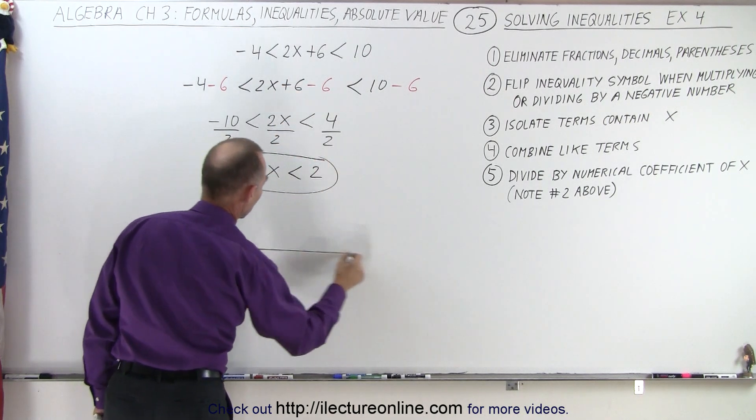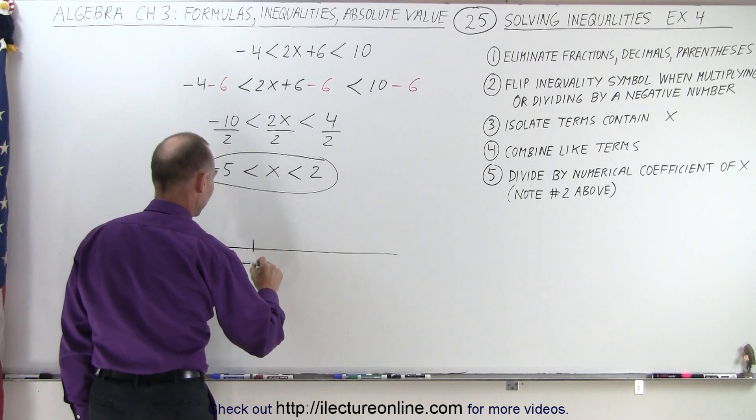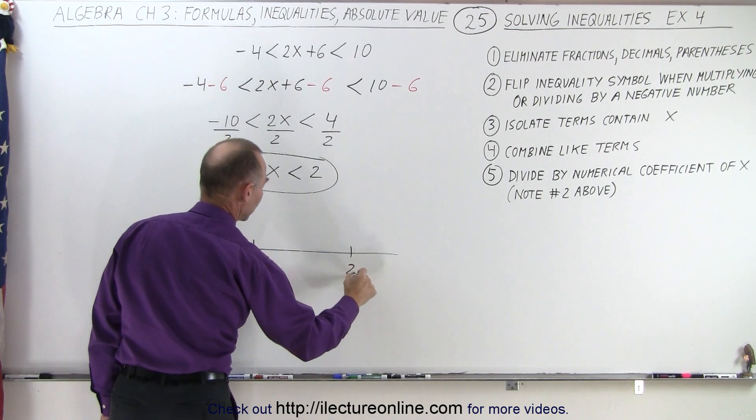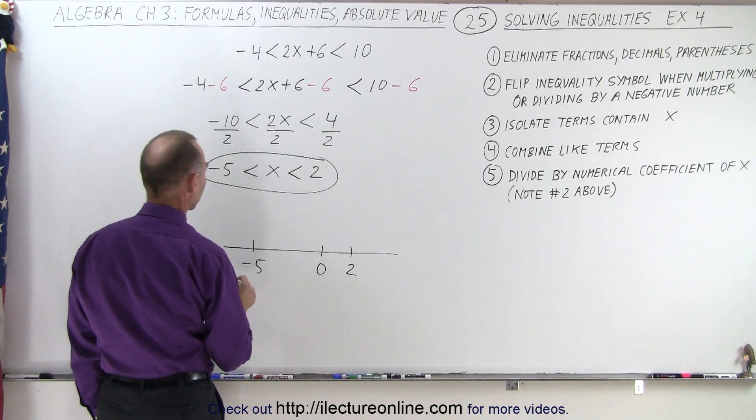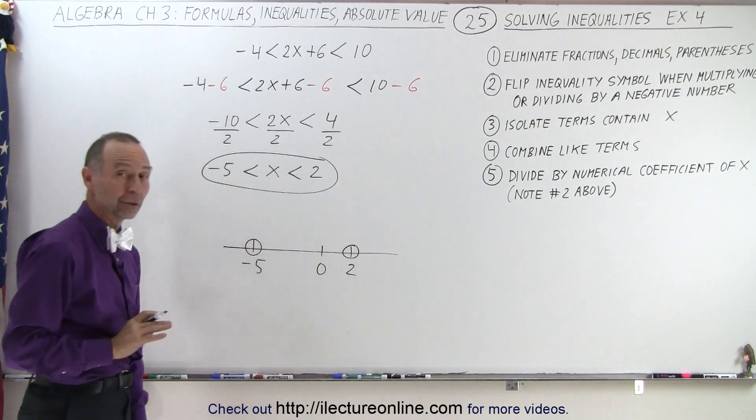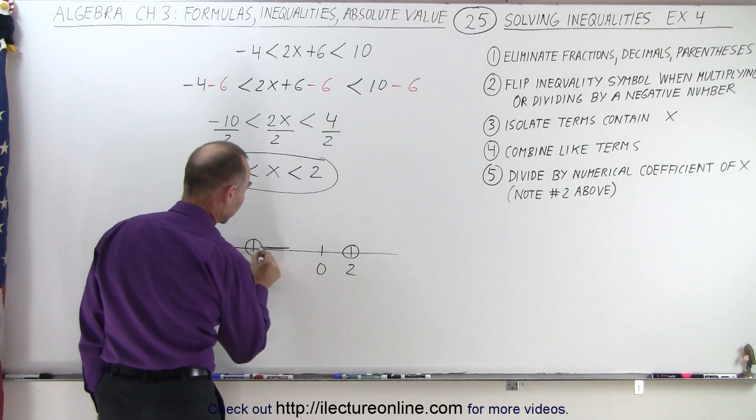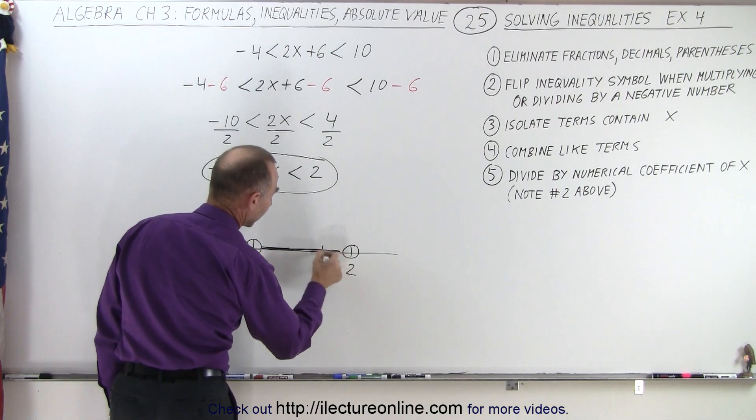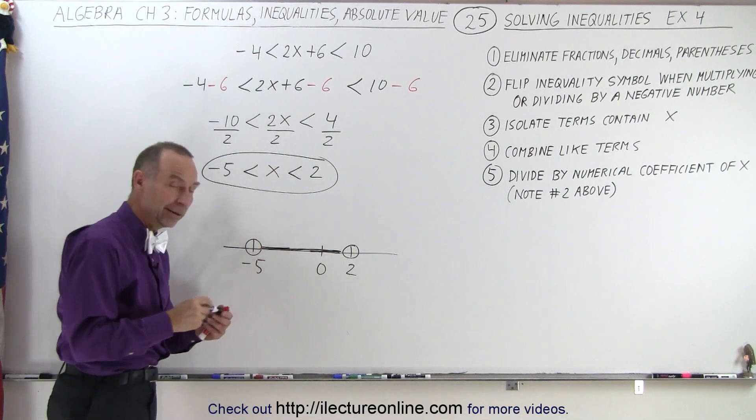So on a graph it would look as follows: we have negative 5, we have positive 2, we could put the 0 there. We draw little circles around the negative 5 and 2 because it does not include the endpoints, and all values in between. And that is how it's done.